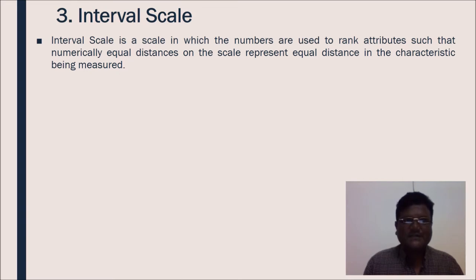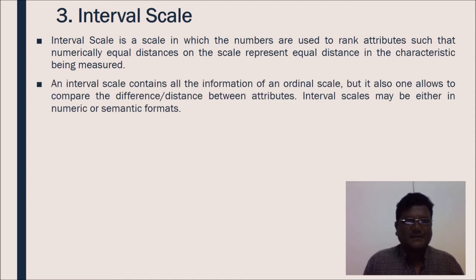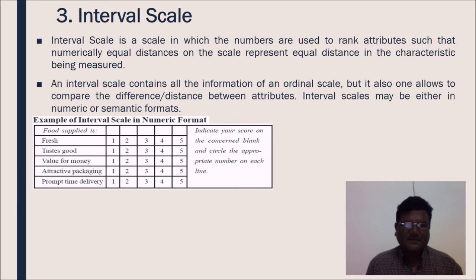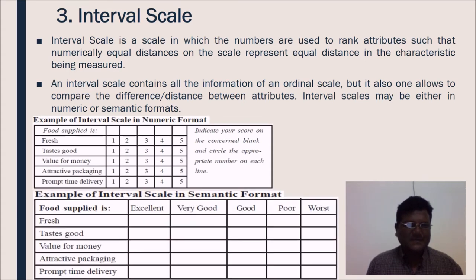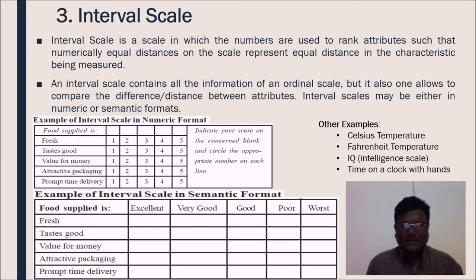Next scale is interval scale. Interval scale is a scale in which the numbers are used to rank attributes such that numerically equal distances on the scale represent equal distance in the characteristic being measured. An interval scale contains all the information of an ordinal scale, but it also allows to compare the difference or distance between attributes. Interval scales may be either in numerical or semantic format. These are the examples of interval scale: Celsius temperature, Fahrenheit temperature, intelligence scale i.e. IQ scale, time on a clock with hands.